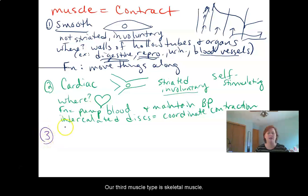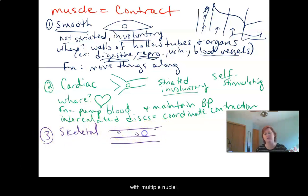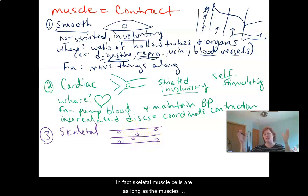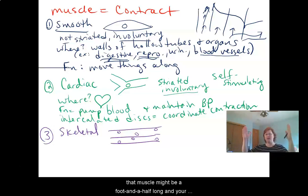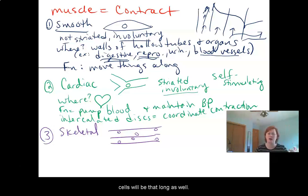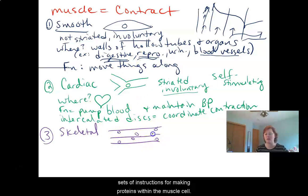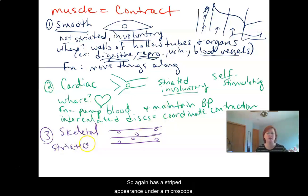Our third muscle type is skeletal muscle. These are long rod-shaped muscle cells with multiple nuclei, and we need that because these cells are incredibly long — skeletal muscle cells are as long as the muscles they are in. Something like your rectus femoris in your quadriceps might be a foot and a half long, and your cells will be that long as well. We need multiple control centers for making proteins within the muscle cell. Skeletal muscle is striated, so it has a striped appearance under a microscope. Remember, the only one that is not striated is smooth.